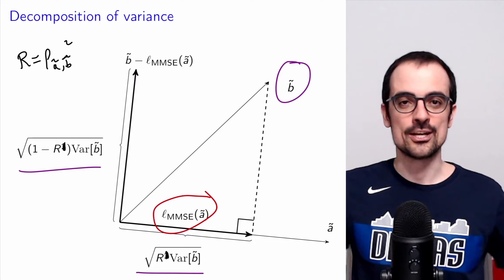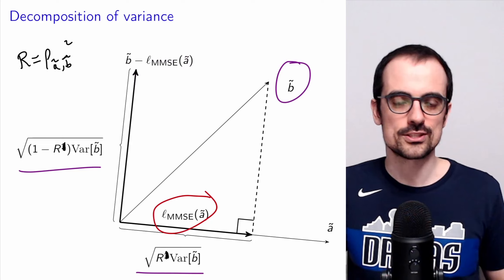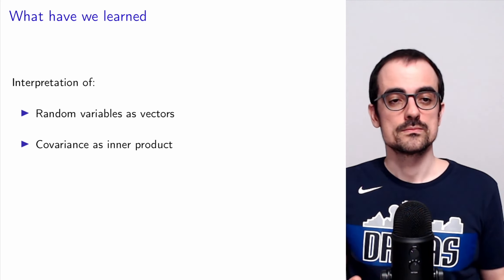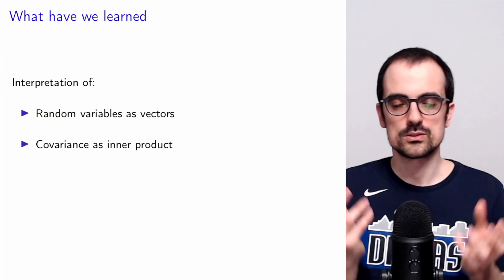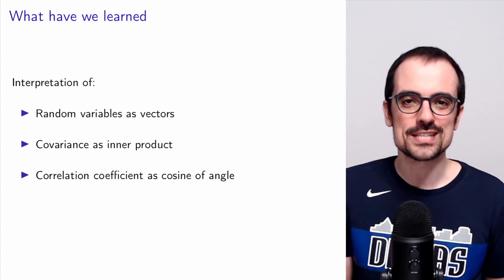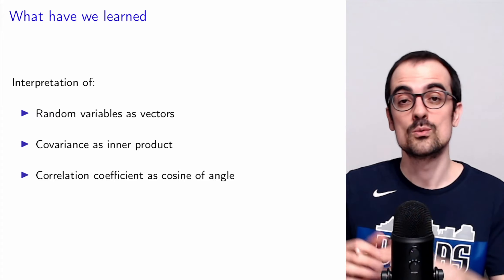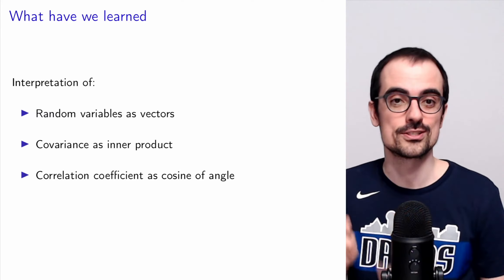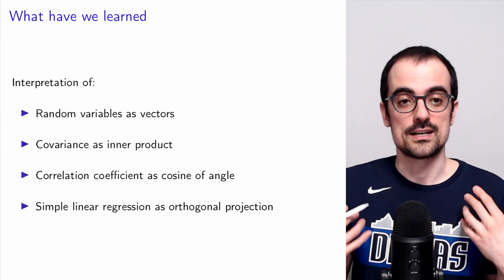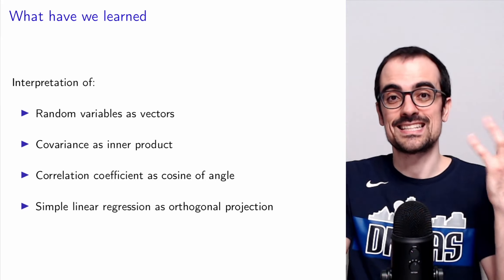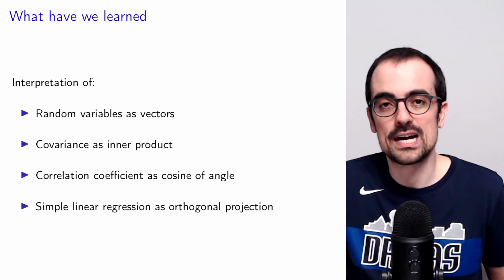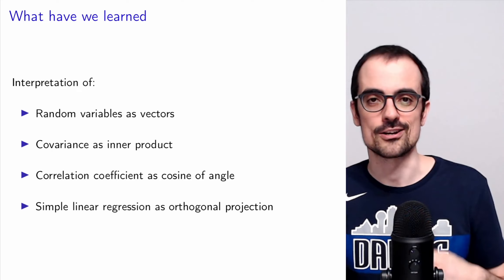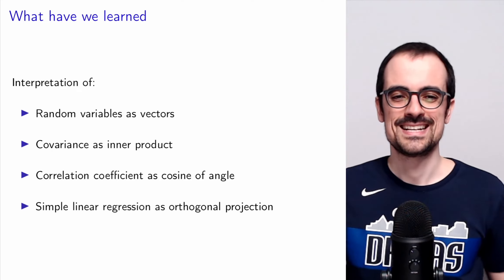So what have we learned? We have learned an interpretation of random variables as vectors, and of covariance as an inner product between those vectors, allowing us to think about angles. The cosine between the angles is the correlation coefficient between the two random variables, which allows us to interpret correlation in terms of the direction the two vectors are pointing — same direction, opposite directions, or orthogonal. Finally, we saw that we could re-derive the simple linear regression estimate by interpreting it as an orthogonal projection, and we also re-derived the decomposition of variance and the fact that the coefficient of determination is the fraction of variance explained linearly by another random variable.